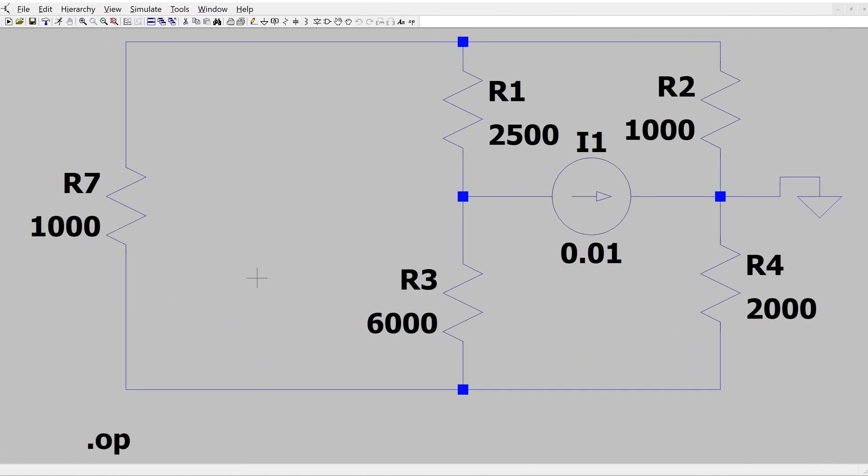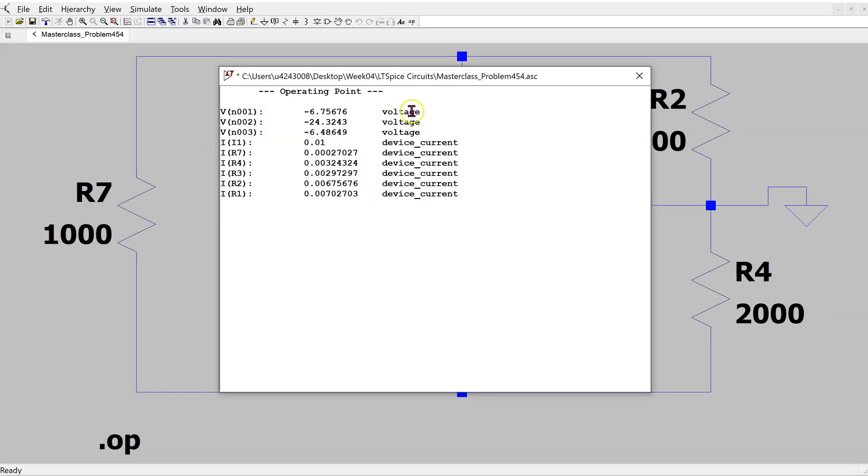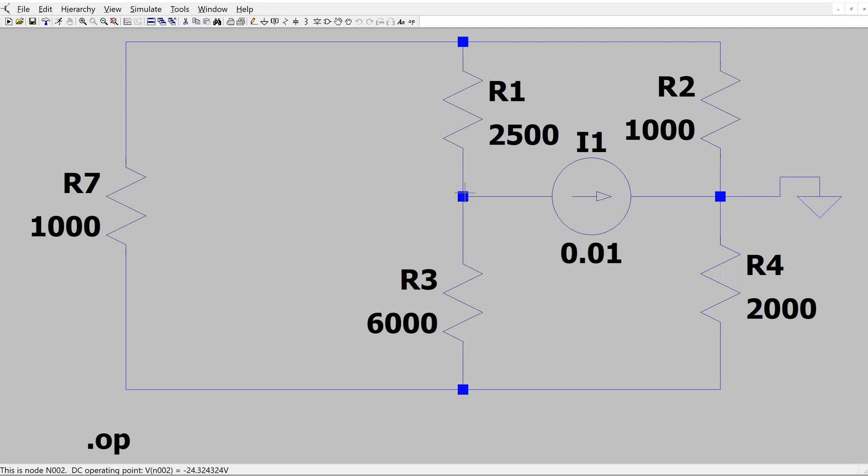We can use LT-SPICE to reconfirm the solution. This is the same bridge circuit drawn in LT-SPICE. Note that it is not possible to rotate resistors by 45 degrees, therefore the bridge circuit is drawn in this way. Also for this example we have placed the ground at this node so the voltage at this node will give us the voltage drop across the current source. So by running this simulation and bringing the cursor at this node we can see that voltage at this node in the bottom left corner is minus 24.32 volts as we calculated and the power dissipated in the independent current source is minus 243.24 milliwatts. So this confirms the solution.